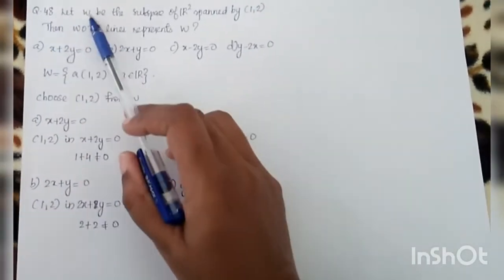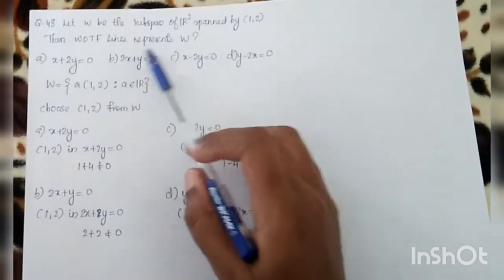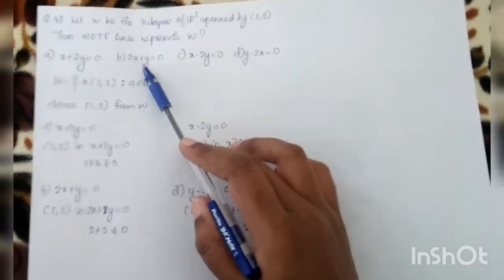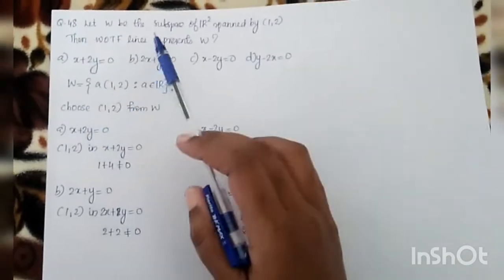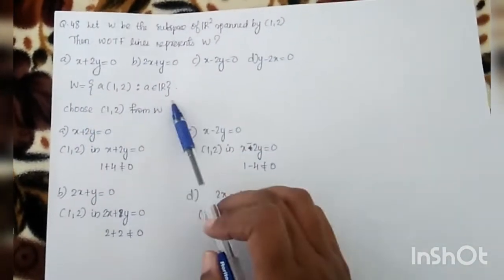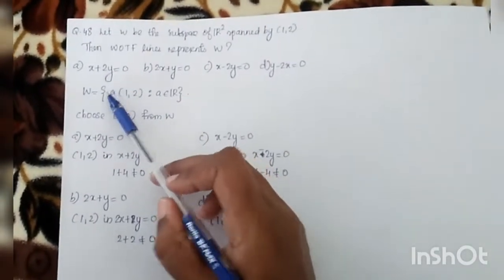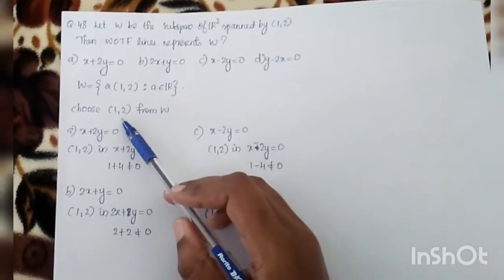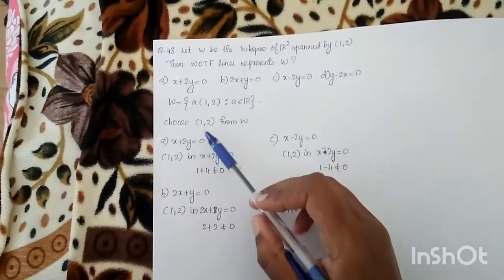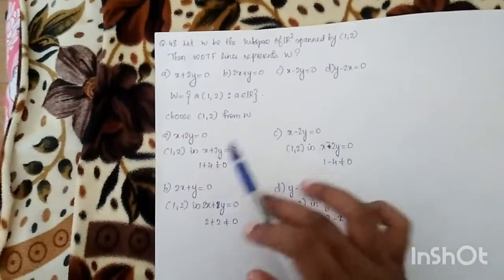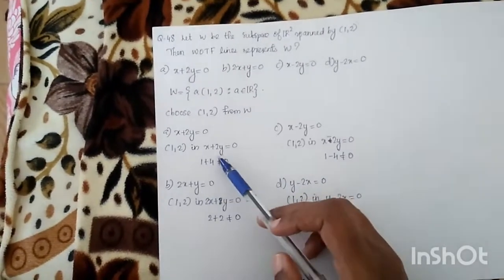Next question, question 48: Let W be the subspace of R², spanned by (1,2). Which of the following lines represents W? Options: x+2y=0, 2x+y=0, x-2y=0, y-2x=0. We write W = A·(1,2) where A is in R. We choose the point (1,2) in W. Substituting into the first line x+2y=0 gives 1+4=5≠0, so that condition is violated.